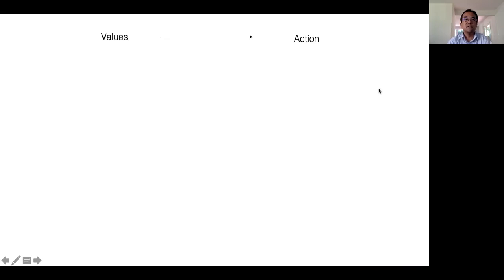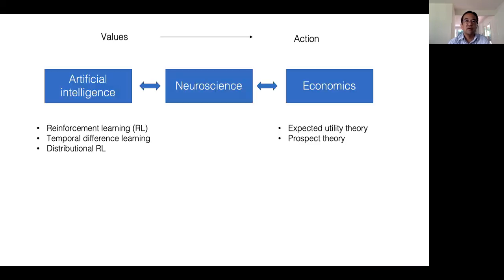The two key processes in decision-making are assigning values to different actions or options and choosing the best action among them. Decision-making has been studied in many different fields of science, including economics, psychology, and artificial intelligence. This symposium features four speakers who are working in intersections between these fields.